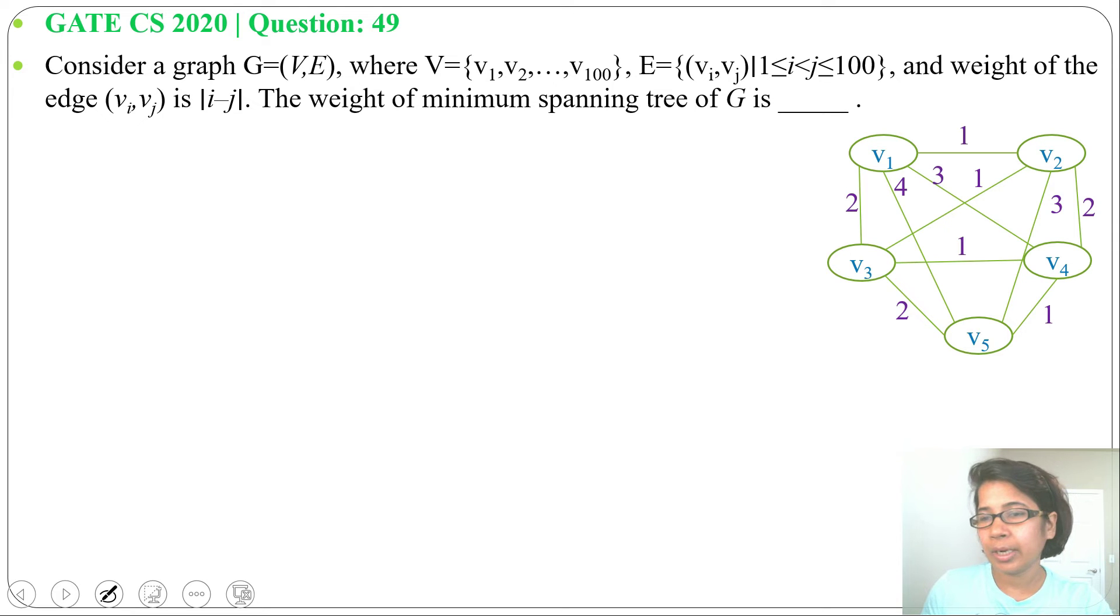Now we will construct minimum spanning tree on this. Let me include all the edges with weight 1. Now this is the minimum spanning tree. There are 5 vertices, and in minimum spanning tree there are 4 edges.